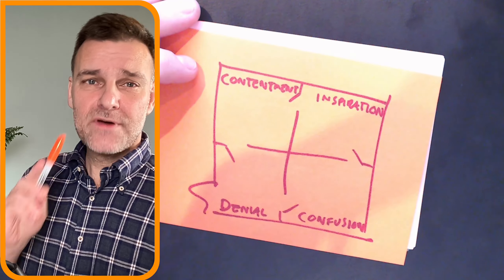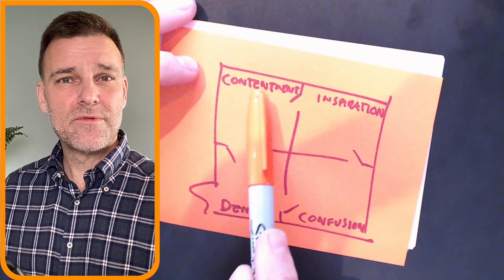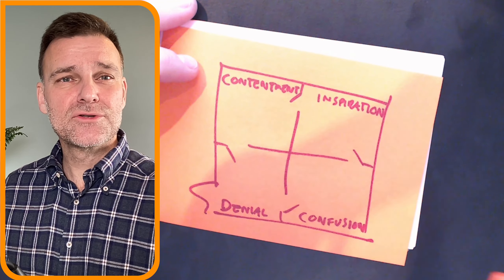And it's very simple, like this. You have four different rooms: the room of inspiration, the room of contentment, the room of denial, and then finally the room of confusion.